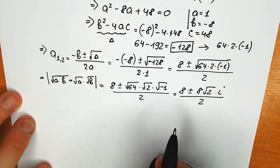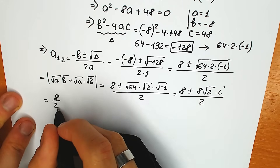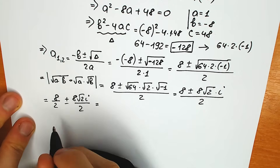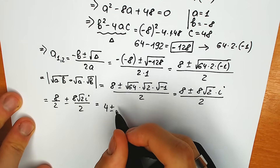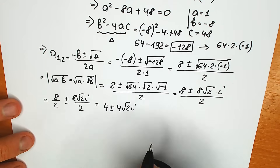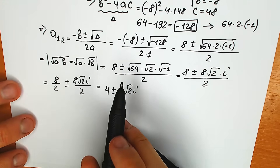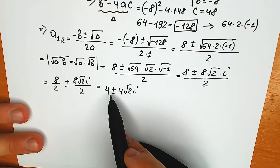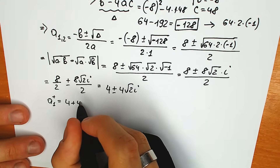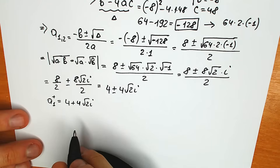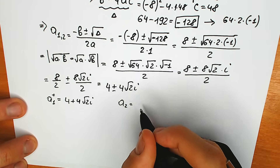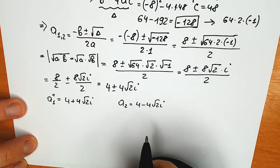Now we can divide the numerator by 2: 8 divided by 2 plus-or-minus 8 times square root of 2 times i, divided by 2. So 8 divided by 2 equals 4, giving us 4 plus-or-minus 4 square root of 2 times i. So a₁ equals 4 plus 4√2·i, and a₂ equals 4 minus 4√2·i.